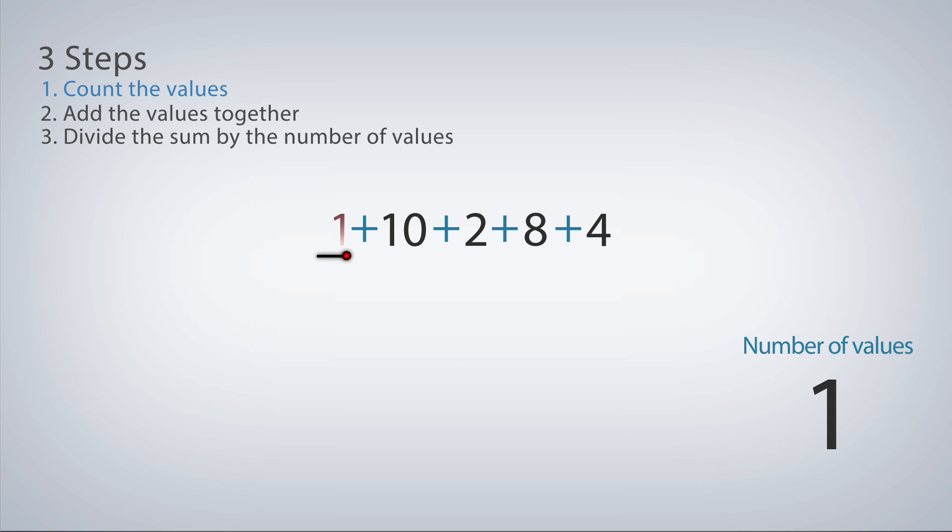Finding an average is a three-step process. First, count the number of values. Then, add the given values together. Lastly, divide the sum by the number of values.